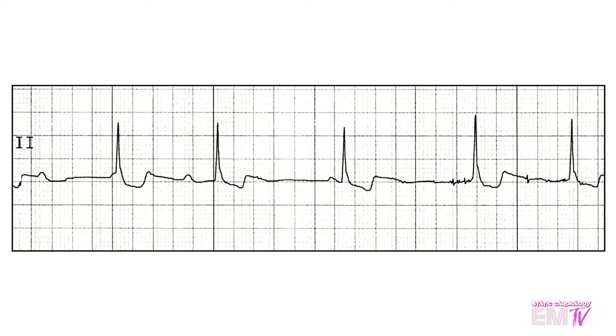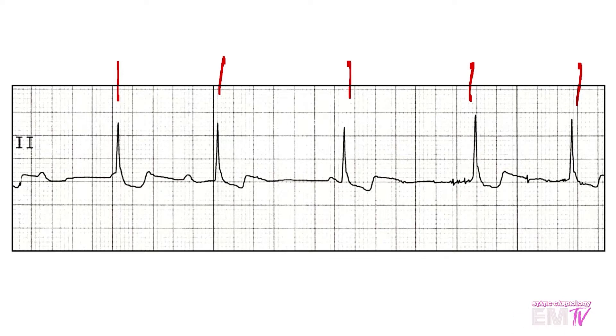The first thing I like to do whenever I identify a rhythm is to count the rate. I'm counting five R waves here, which would mean this has a rate of about 50 BPM.